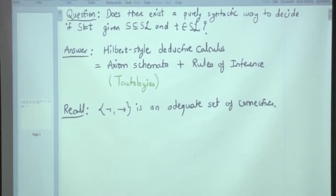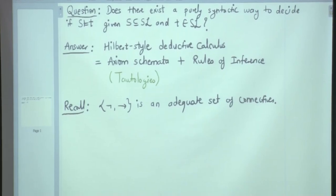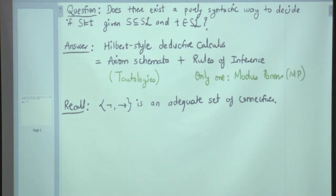And the rule of inference — there will be only one. What is that? Modus ponens, or for short, we are going to call it MP.